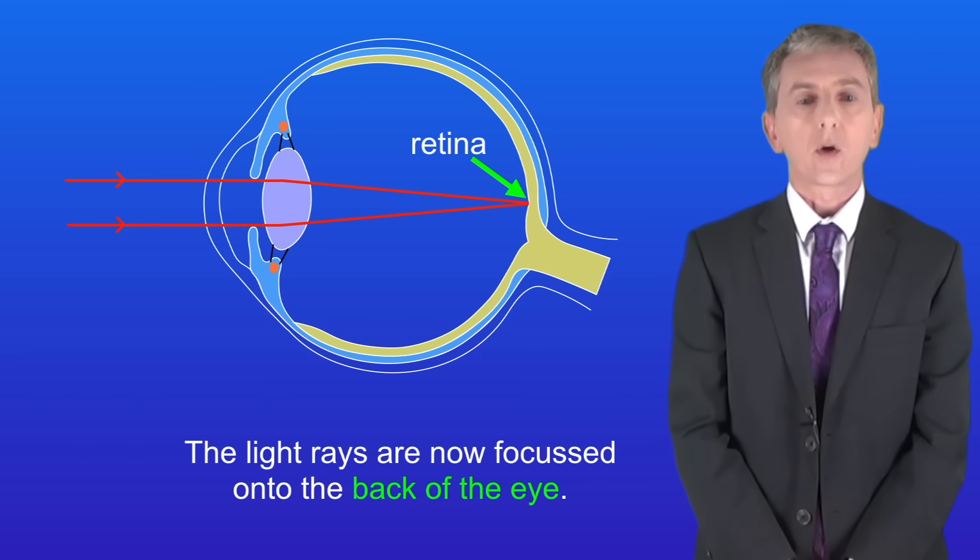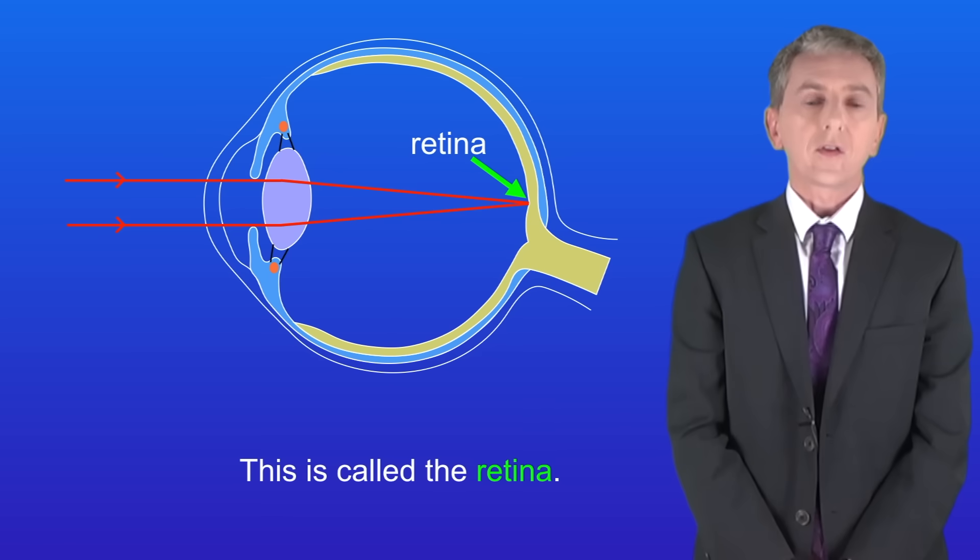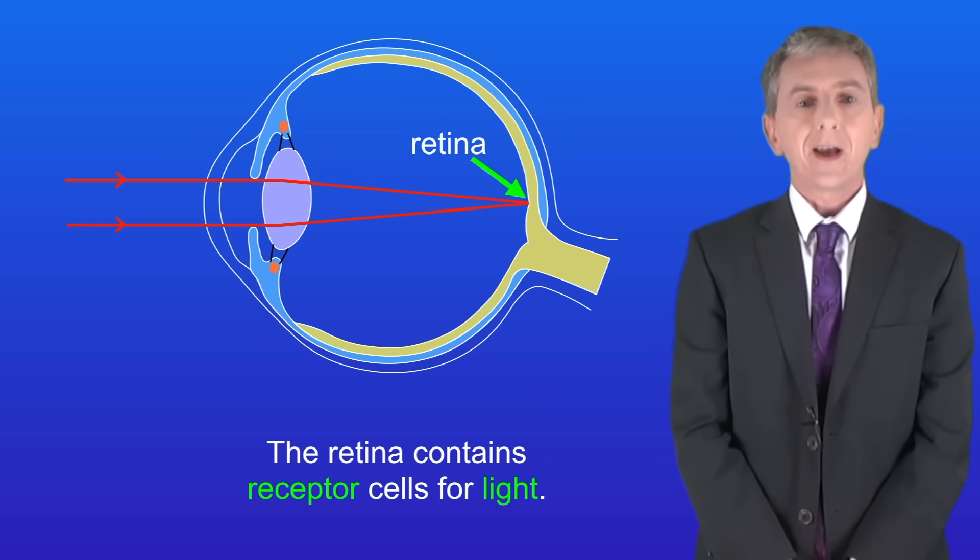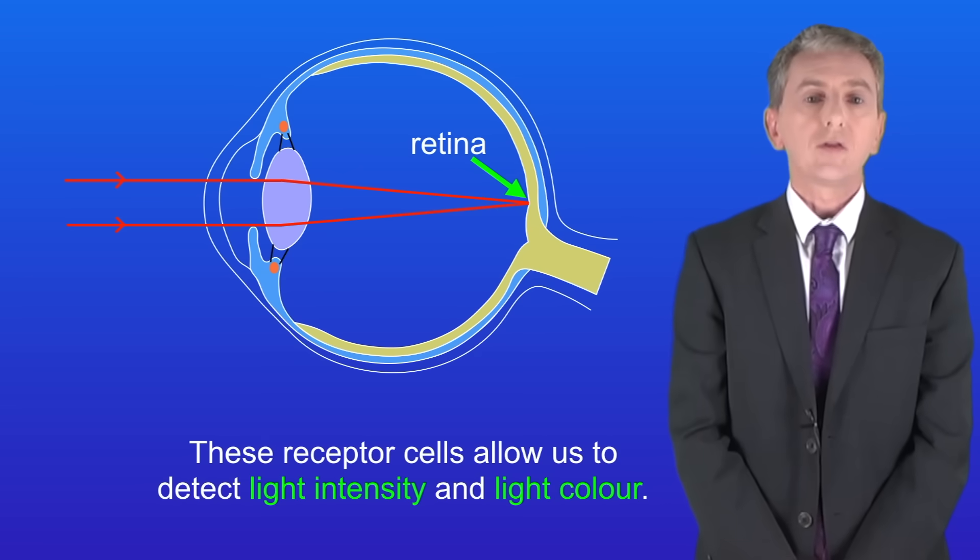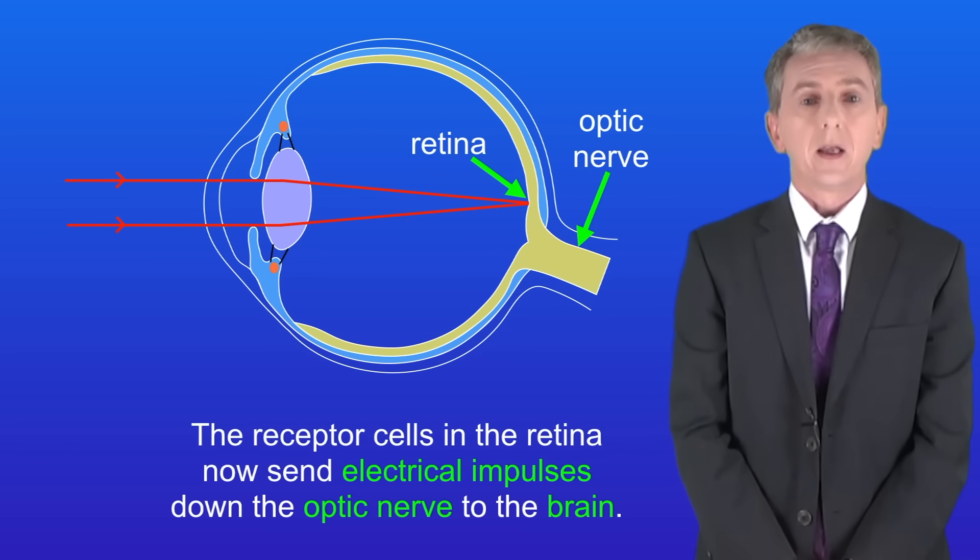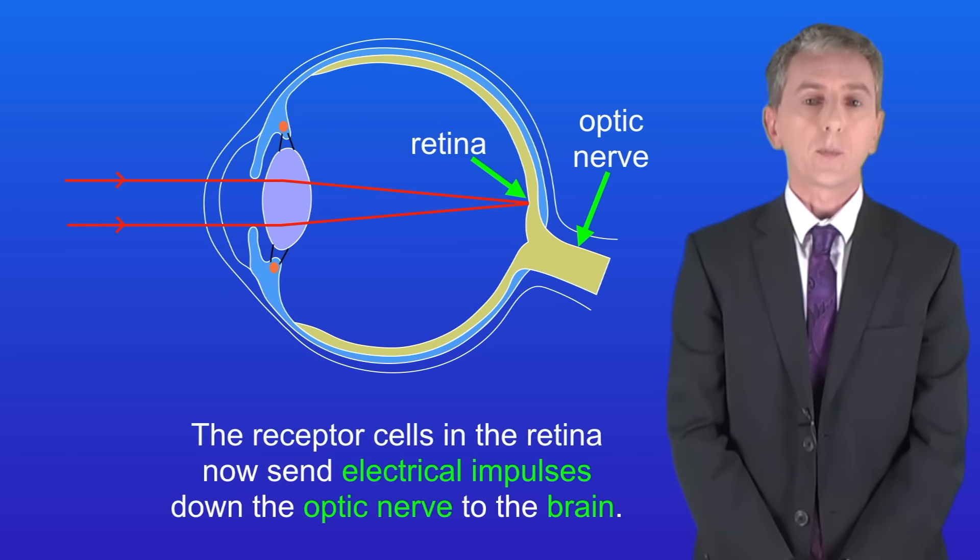The light rays are now focused onto the back of the eye. This is called the retina and the retina contains receptor cells for light. These receptor cells allow us to detect light intensity and light colour. The receptor cells in the retina now send electrical impulses down the optic nerve to the brain.